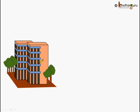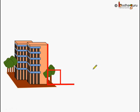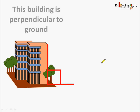Now let's see this building. The building is standing straight on the ground, and the building makes an angle equal to 90 degrees with reference to the ground. We can say the building is perpendicular to the ground as the angle here is equal to 90 degrees, or we can say the building is at right angle to the ground.